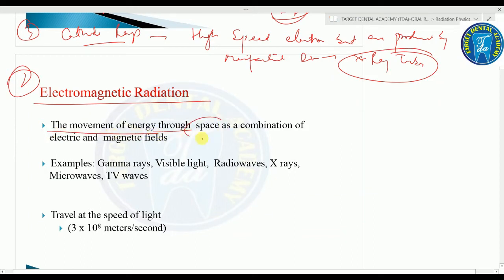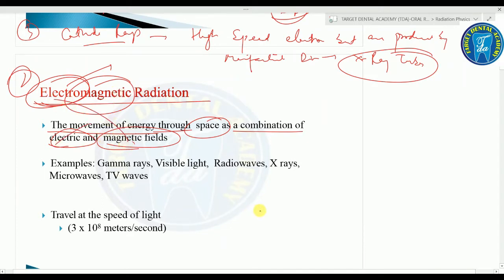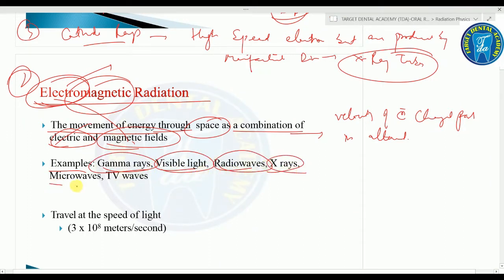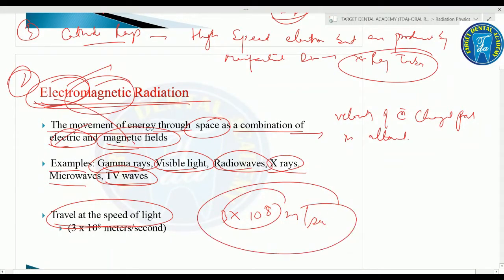Electromagnetic radiation is the movement of energy through space as a combination of electric and magnetic fields. It is generated when the velocity of an electrically charged particle is altered. Examples include gamma rays, visible light, radio waves, X-rays, microwaves, and TV waves. Electromagnetic radiation travels at the speed of light, that is 3×10⁸ meters per second.